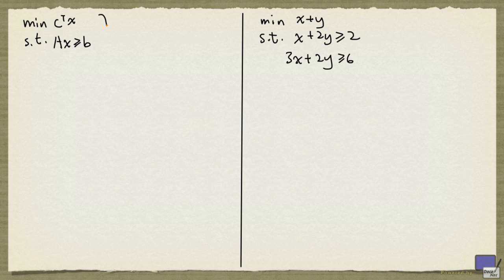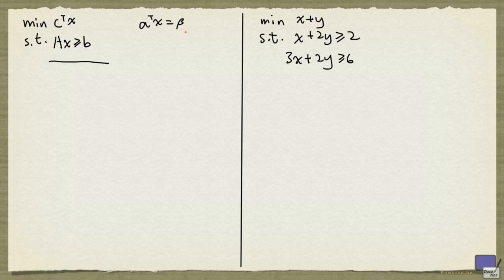First of all, we may assume that our problem looks like this. If we have a maximization problem, we can convert it to a minimization problem by taking the negative of the objective function and minimizing that. And for any linear constraint, we can write it as a greater than or equal to constraint. For example, if we have a less than or equal to constraint, we can just multiply both sides by minus one, and that will give us a greater than or equal to inequality. And if we have an equality constraint, we can write it as a pair of inequalities — for example, a-transpose x equals beta can be written as a-transpose x ≥ beta, and negative a-transpose x ≥ negative beta.